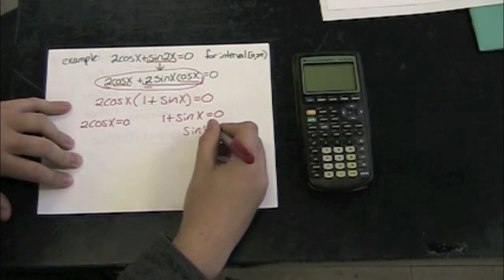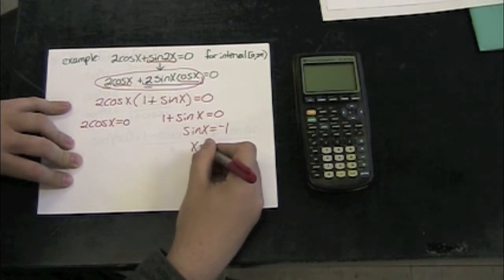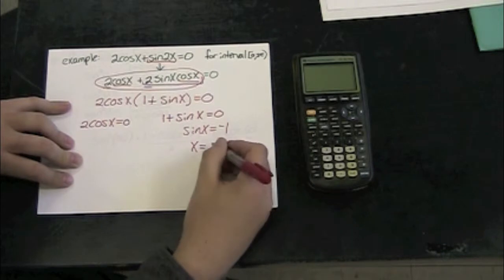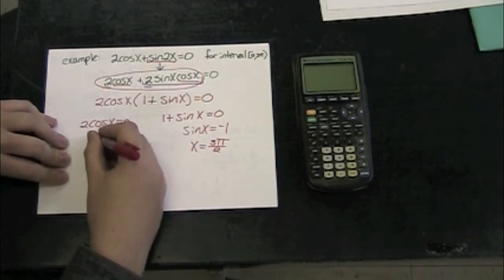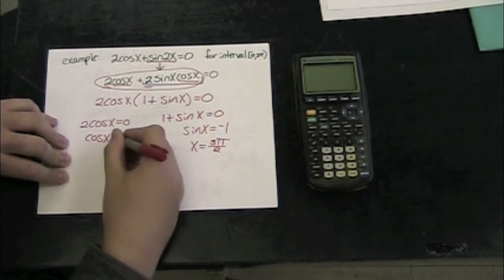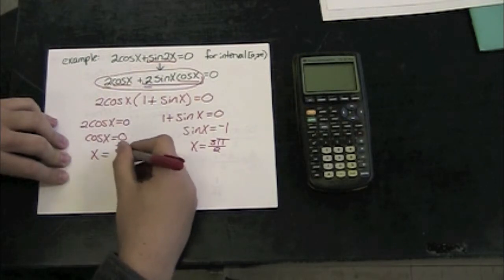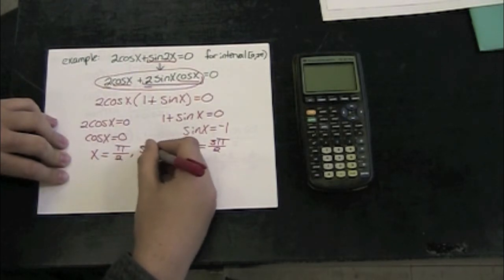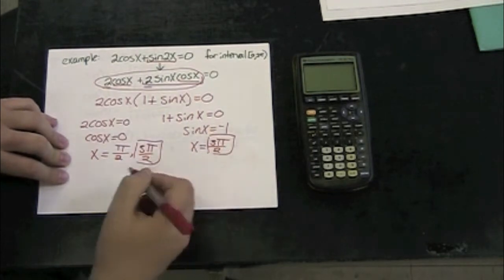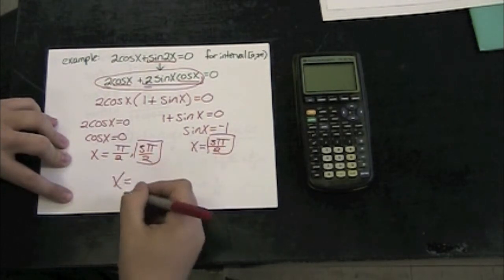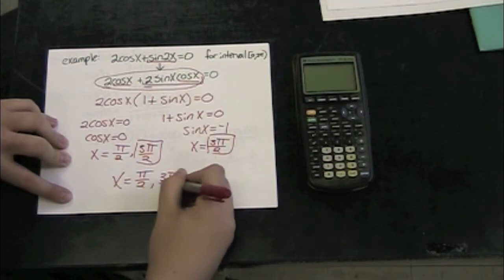I'm going to find that sine of x equals negative 1, which means that x could equal 3 pi over 2 or 3 pi over 2. One of our answers is duplicated, which is OK. I get a solution of x equals pi over 2 and 3 pi over 2.